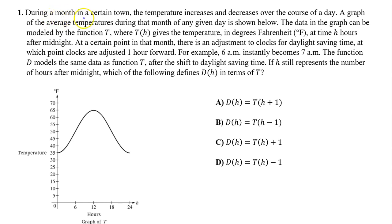Number 1. During a month in a certain town, the temperature increases and decreases over the course of a day. A graph of the average temperatures during that month for any given day is shown below. The data in the graph can be modeled by the function t, where t gives the temperature in degrees Fahrenheit at time h hours after midnight. At a certain point that month, there is an adjustment to the clocks for daylight savings time, at which point clocks are adjusted one hour forward. For example, 6am instantly becomes 7am. The function d models the same data as function t after the shift to daylight savings time. If h still represents the number of hours after midnight, which of the following defines d of h in terms of t?